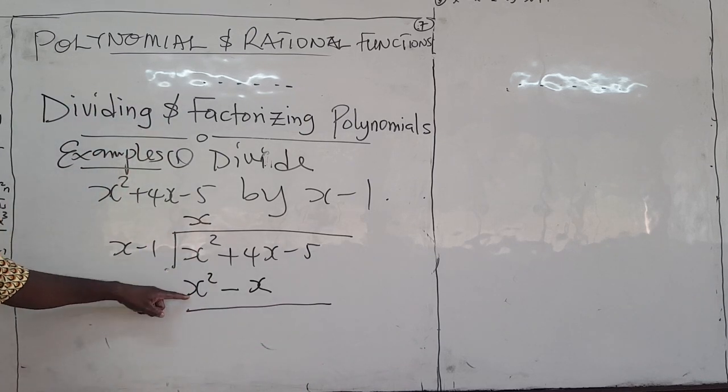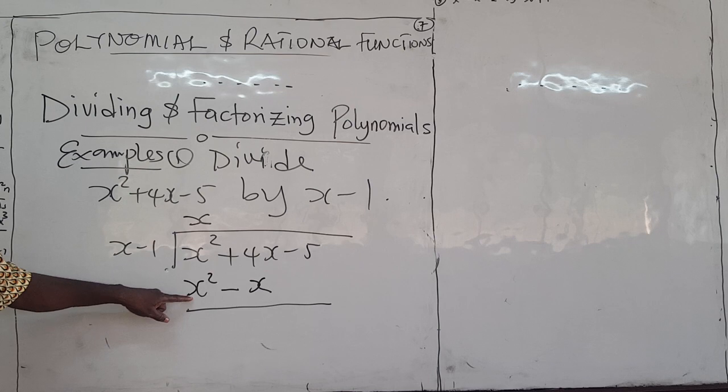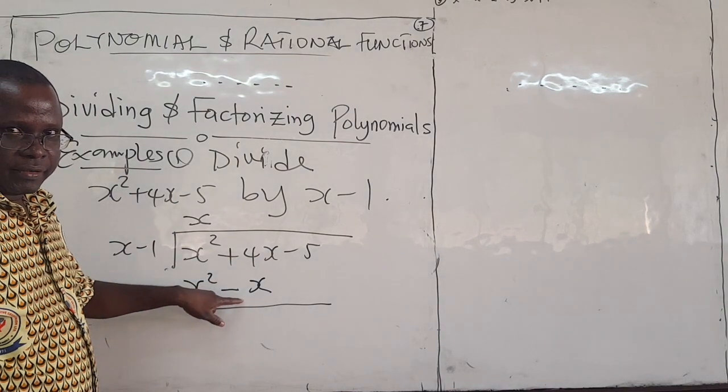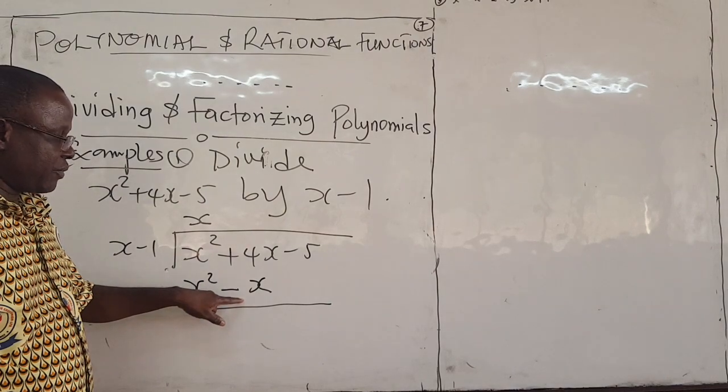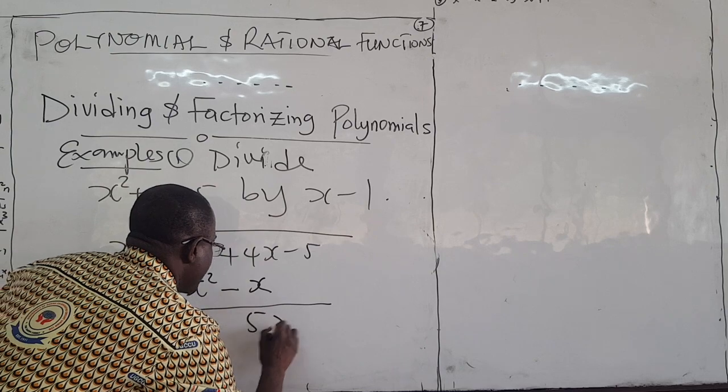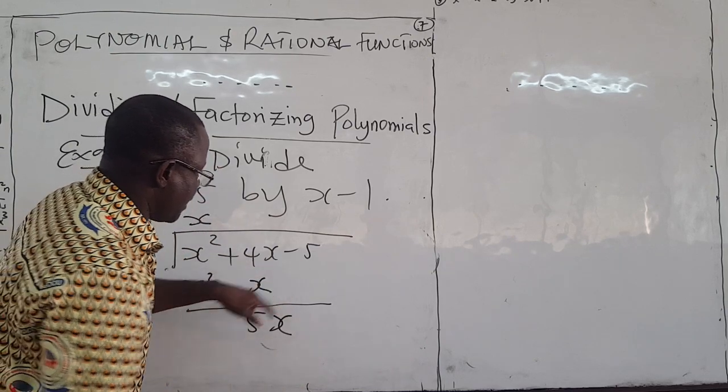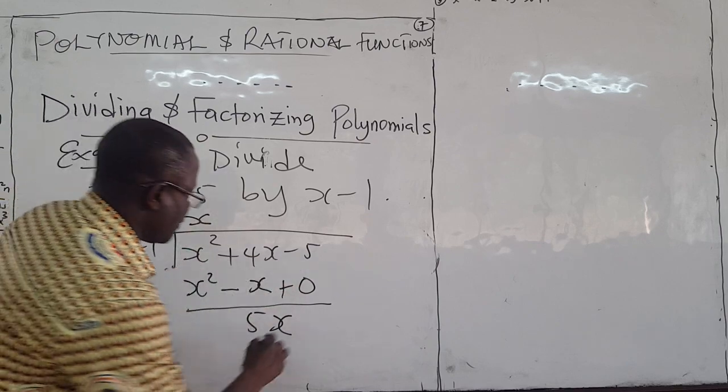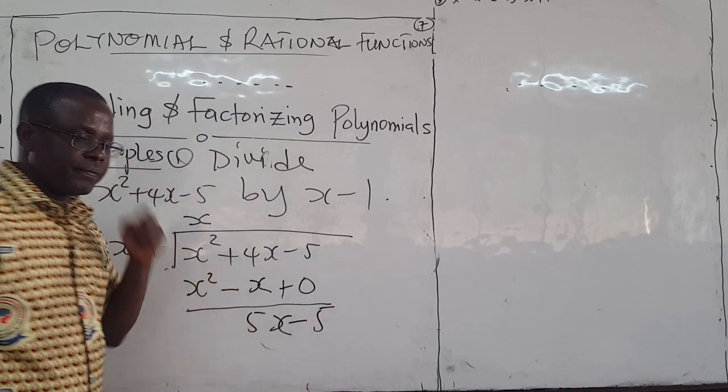Then you subtract, this and this cancel out. x squared minus x squared is 0. 4x minus minus x is 5x. You have negative 5 minus, this is like a 0 here. So, you have negative 5 minus 0, that is negative 5.